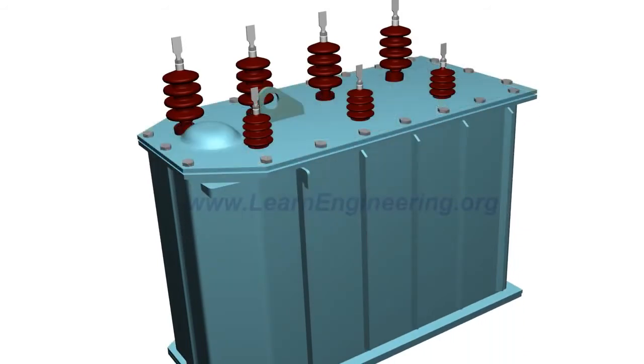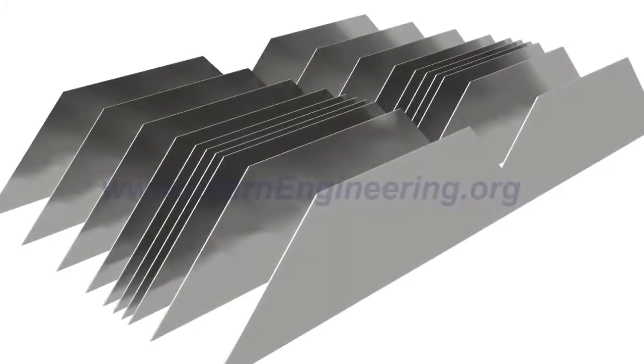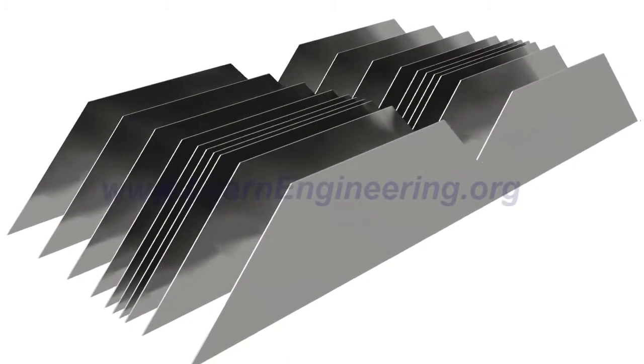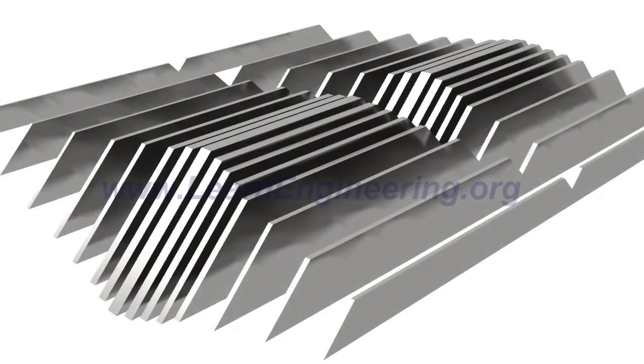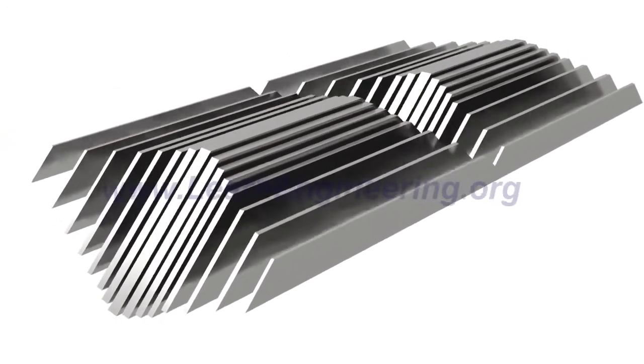The core of the transformer is made of thin insulated steel laminations. Such steel laminations are stacked together, as shown, to form three-phase limbs.